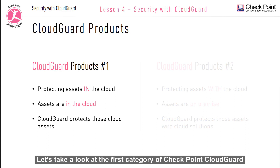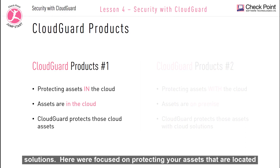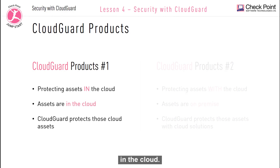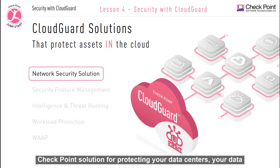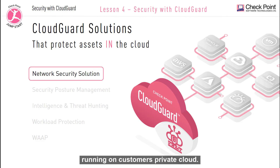Let's take a look at the first category of Checkpoint CloudGuard solutions, focused on protecting your assets that are located in the cloud. The network security solution, formerly known as CloudGuard IIS, is Checkpoint's solution for protecting your data centers — data centers on the public cloud and even data centers running on a customer's private cloud.